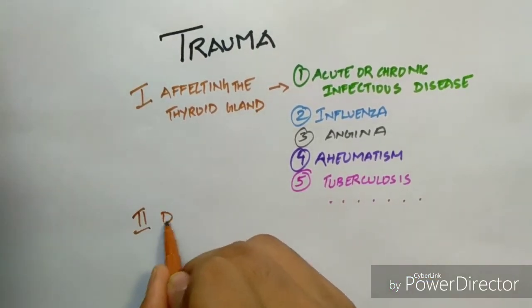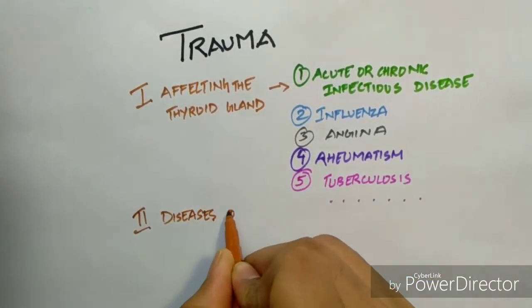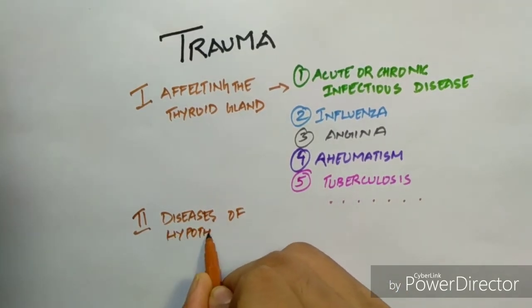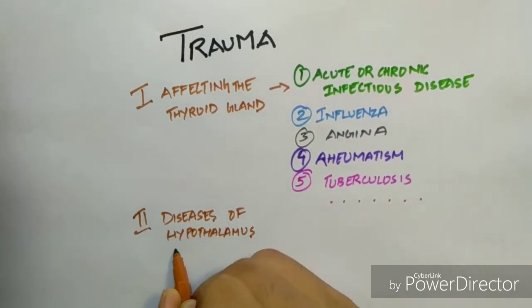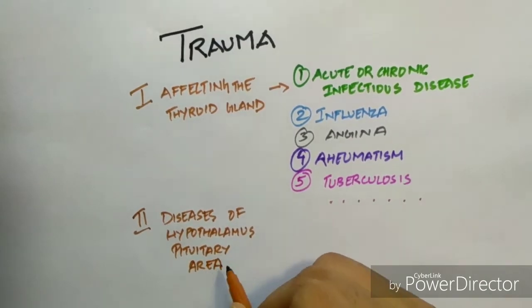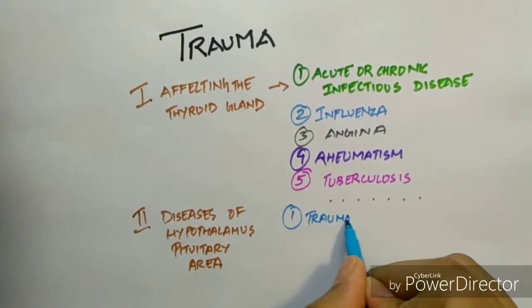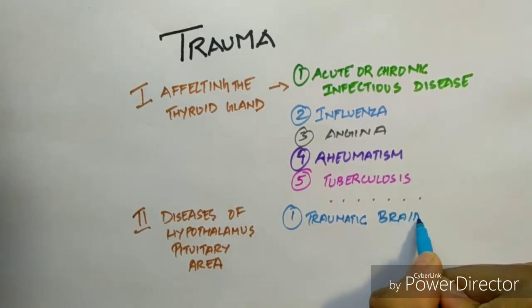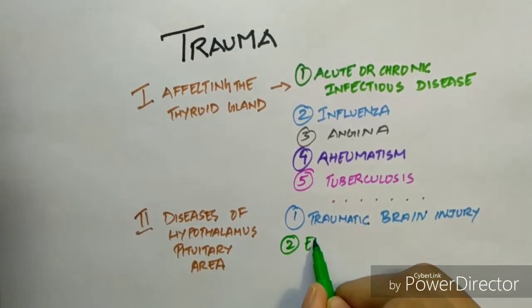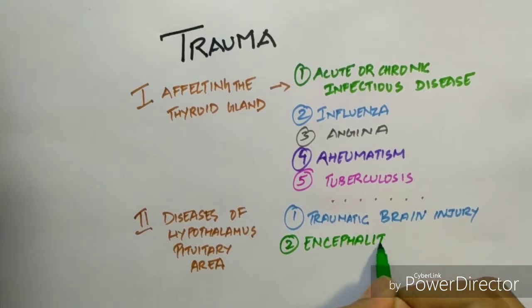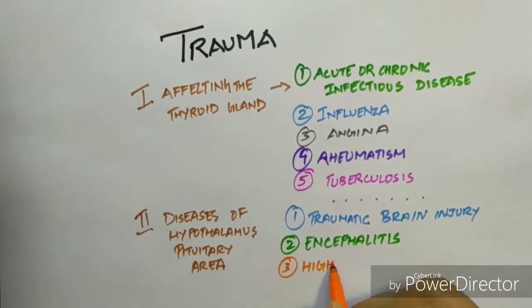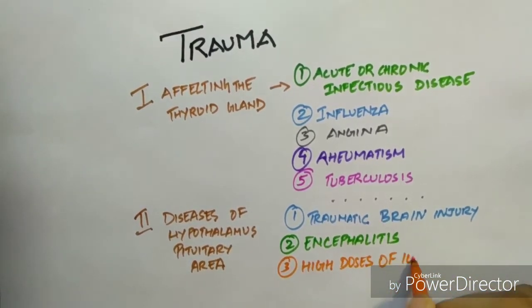Second is affecting the hypothalamo-pituitary area. Those diseases can be traumatic brain injury, encephalitis, and third being high dosage of iodine.